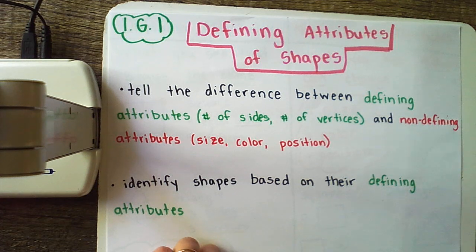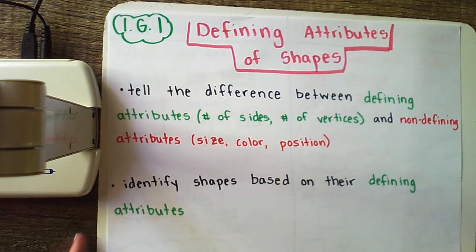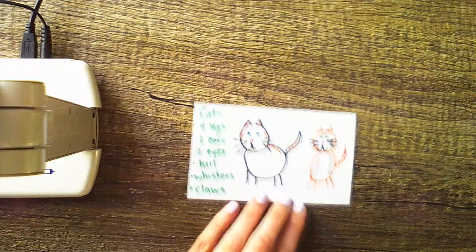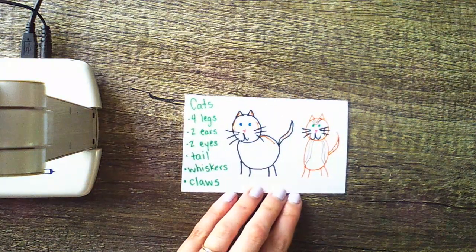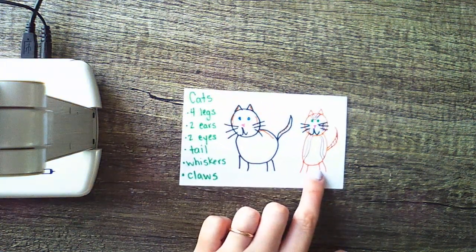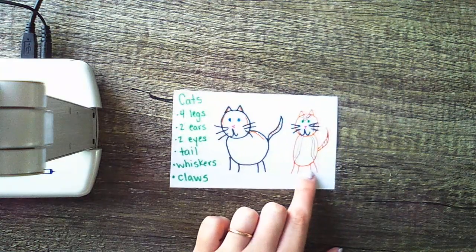Now you might be saying, Miss Burns, you're talking a whole bunch of mumbo jumbo using all these big words. What on earth are attributes? Well, let me give you a real life example. As many of you know, I have three cats. Two of them are brothers and they look kind of like this cat over here — Baby Lobster and Pungie. And then our other cat is named Hewie.